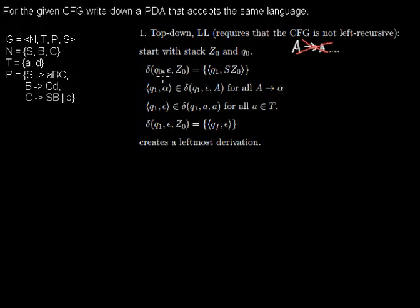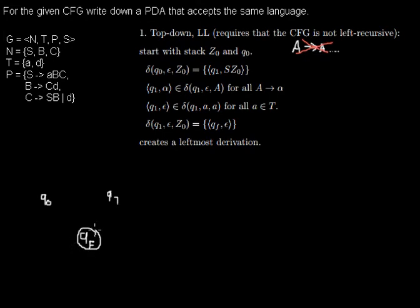We need three states: q0, q1, and qf. The automaton shall start in q0, so I make this the initial state.